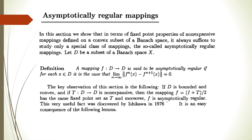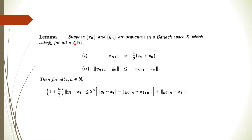Next we will prove a lemma. The lemma says: suppose x_n and y_n are sequences in the Banach space X satisfying two conditions. Then for all i and n belonging to the natural numbers, a certain inequality holds. The two conditions are: the recursive relation x_{n+1} = (x_n + y_n) / 2, and the norm of y_{n+1} - y_n is less than or equal to the norm of x_{n+1} - x_n.